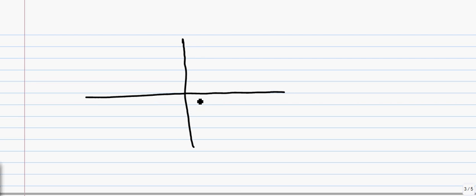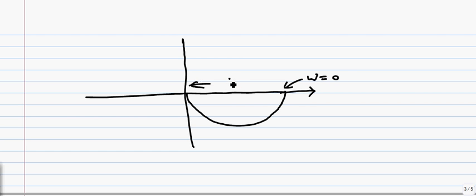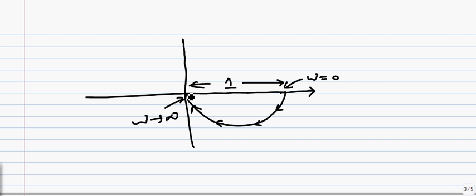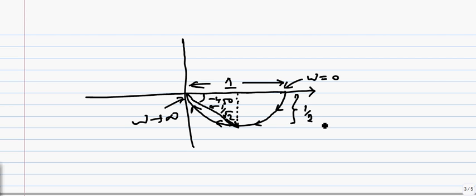Drawing a larger, zoomed-in plot: the starting point at ω = 0 has magnitude 1. As ω tends to infinity, the plot approaches the origin. The arrow marks indicate ω changing from 0 to infinity. At ω = 1/T, the magnitude is 1/√2 and the angle is −45°, with imaginary value −1/2 and real value 1/2. This is how the polar plot for a simple pole looks.